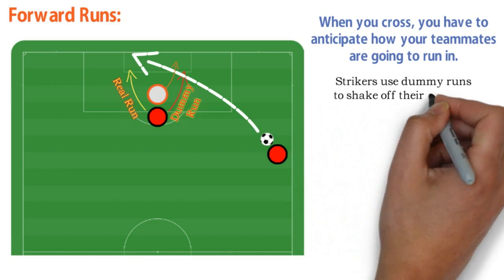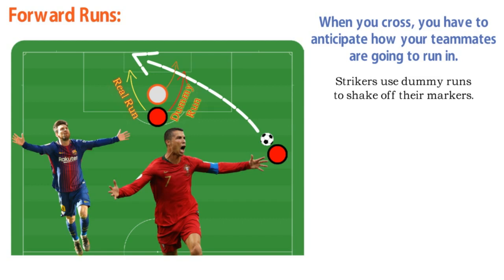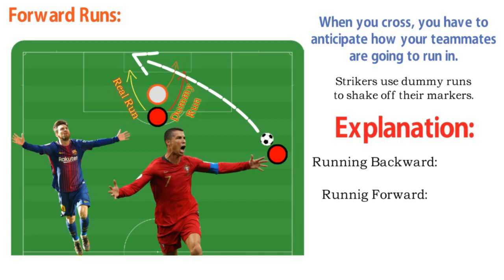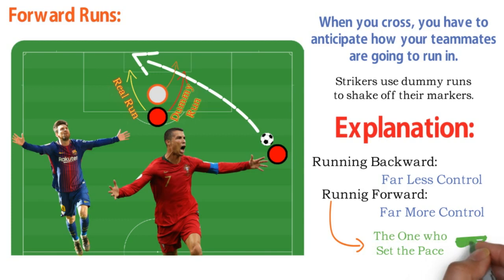Strikers use dummy runs to shake off their markers. Lionel Messi and Cristiano Ronaldo both score often, and almost always after a run. When their side has possession, they are constantly moving around to keep their opponents wondering what they are going to do. Before they get into a scoring position, they have already shaken off their markers with any number of dummies and fake runs. Defenders know the ploy is coming, and they still sprint off in the wrong direction. The explanation is simple: when you are running backward, you have far less control over your body and quickly lose balance with the slightest twist or turn. When running forward, you have far more control, and when you have the ball, you are the one who sets the pace.